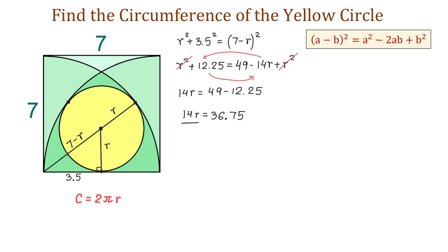Once we have r, we will find the circumference. The circumference C equals 2π times 2.625.